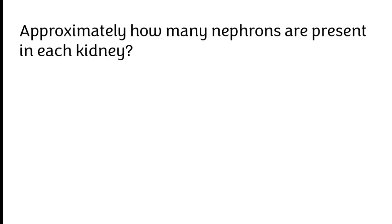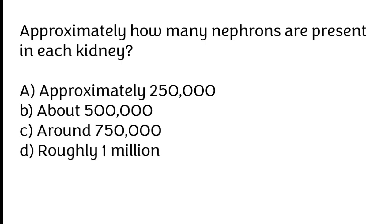Approximately how many nephrons are present in each kidney? A) Approximately 250,000, B) above 5,000, C) around 750,000, D) roughly 1,000,000.